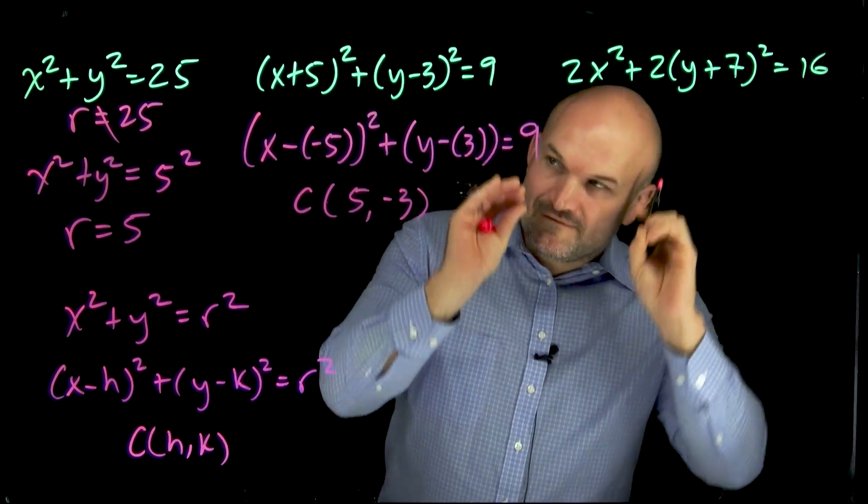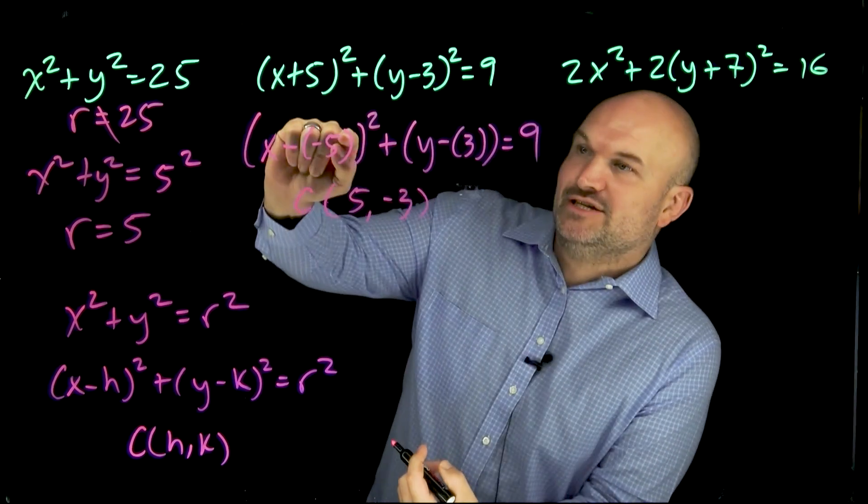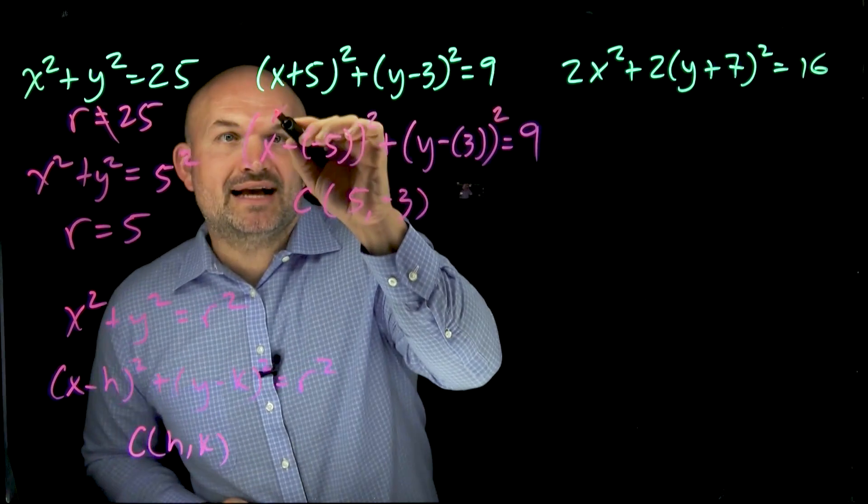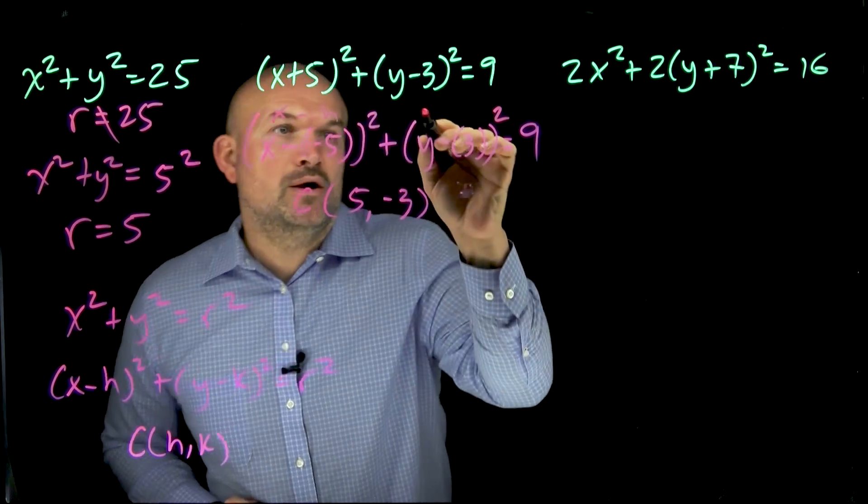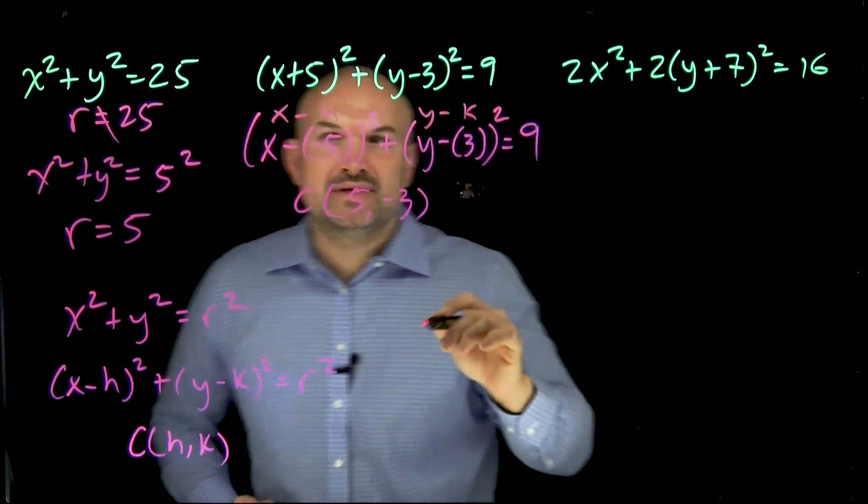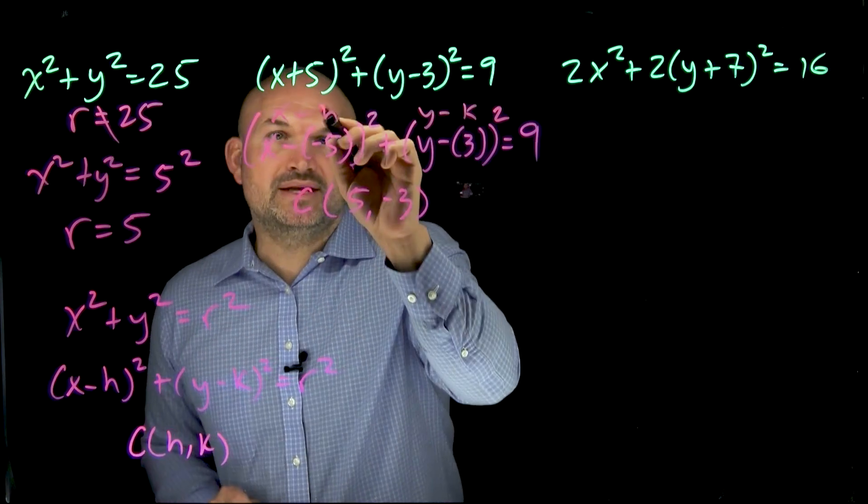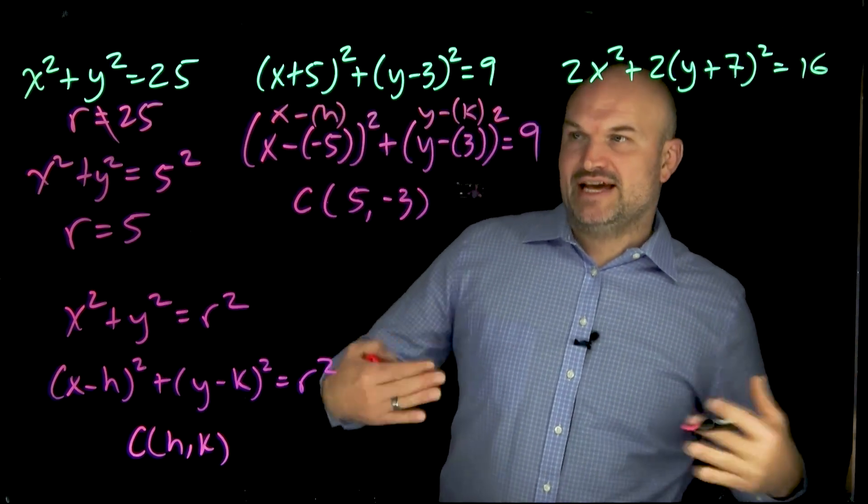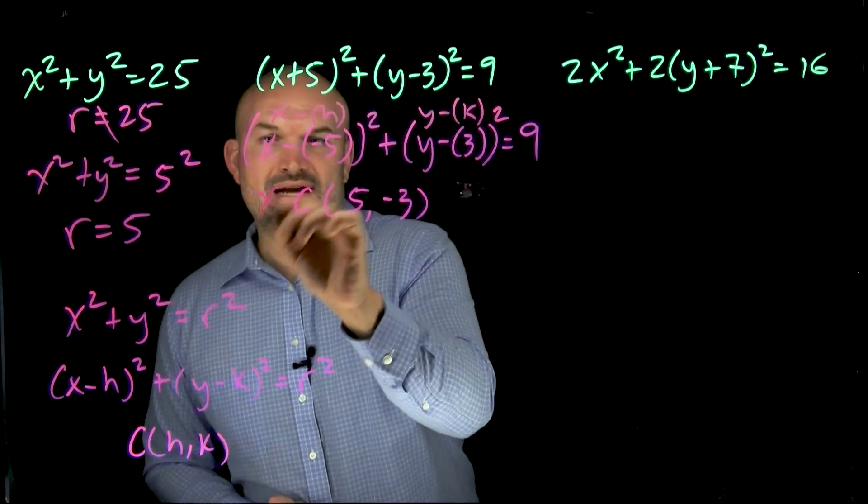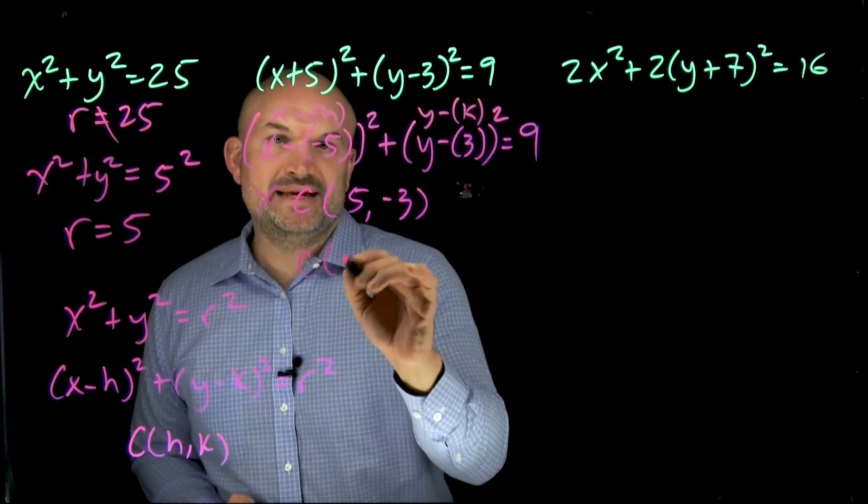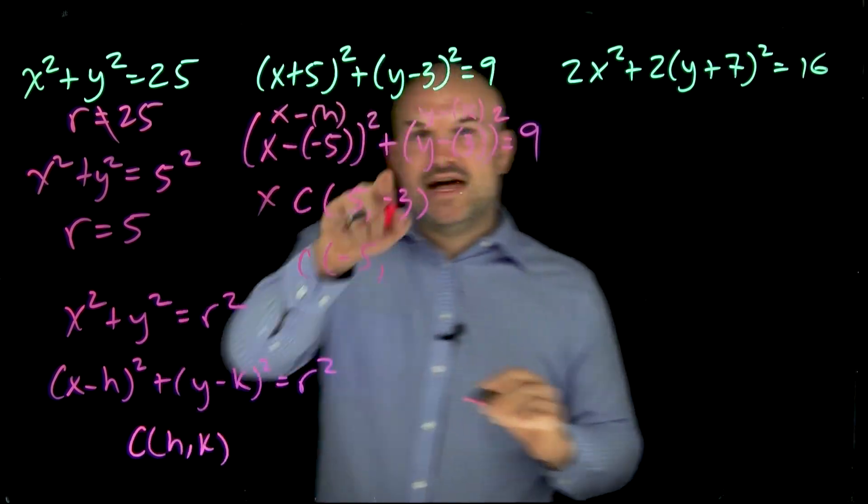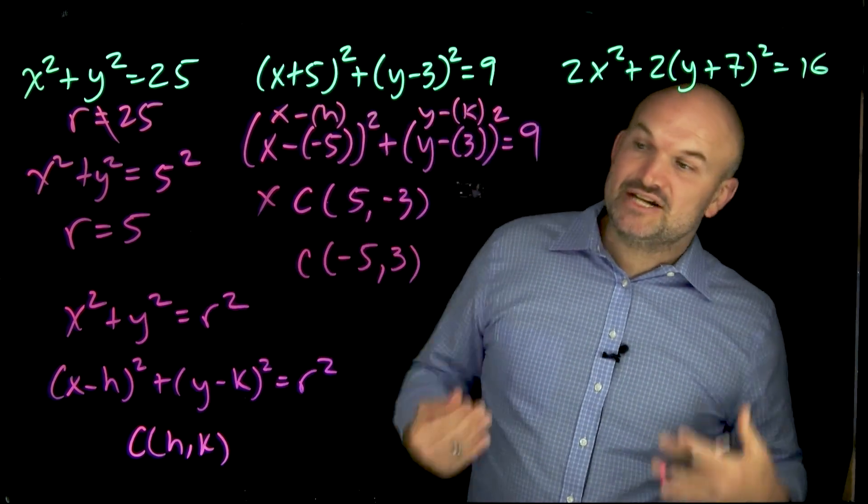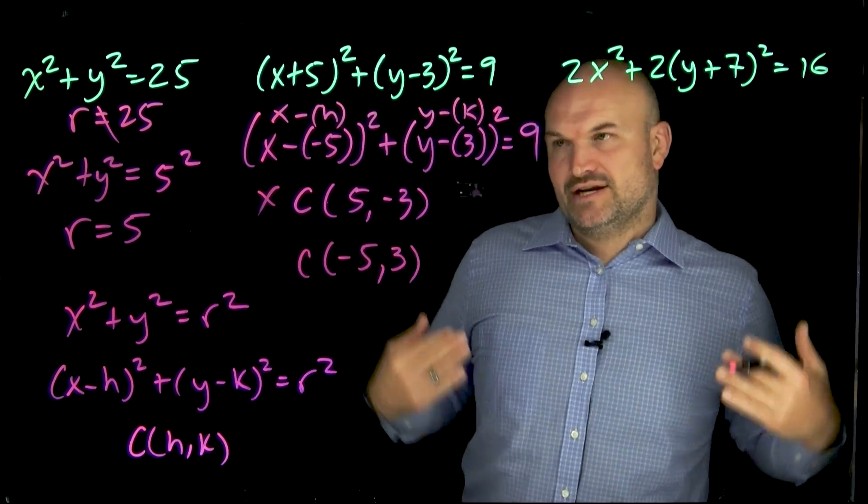But remember, guys, it's about the formula. It's x minus h plus y minus k, quantity squared. x minus h, y minus k. So it might be helpful to even put parentheses in this formula so you can see what exactly are going to be the values of h and k, right? This is incorrect. The values of h is going to be a negative 5. The value of k is going to be a positive 3. So the center in this case is actually a negative 5 and a positive 3.